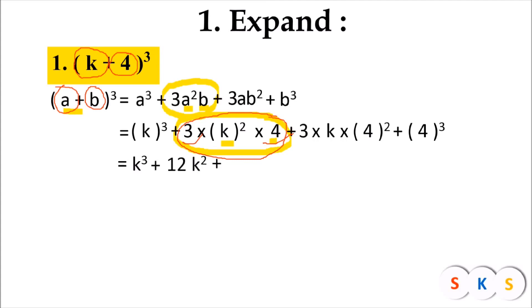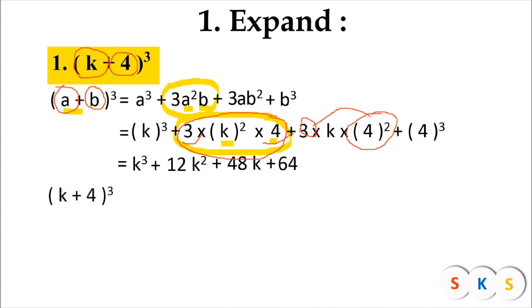We will take the square of 4, which is 16, and multiply 16 with 3 — so 16 into 3 is 48 — giving us 48k. Plus 4 raised to 3, that is 4 into 4 into 4, that is 64. Therefore, k plus 4 the whole cube equals k raised to 3 plus 12k squared plus 48k plus 64.